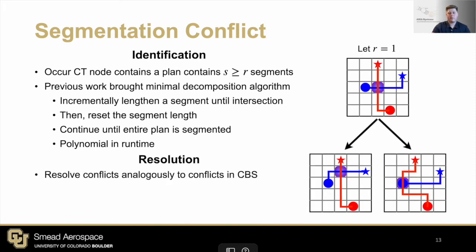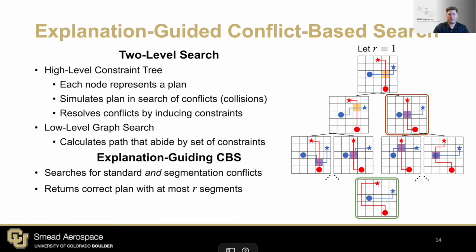This brings me to our first contribution, Explanation-Guided Conflict-Based Search, or XGCBS. This algorithm works by adding segmentation conflicts to CBS. Notice here that CBS outputs the plan outlined in orange, but XGCBS continues to find and resolve segmentation conflicts until a satisfiable solution is found. One may notice how many segmentation conflicts are required to get to the desired result using A-star as the low-level search. Indeed, this does hinder performance in cases where the plan with our desired explanation differs greatly from the optimal plan.